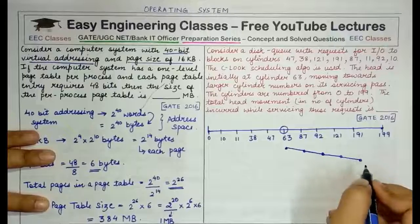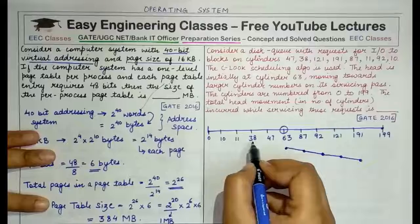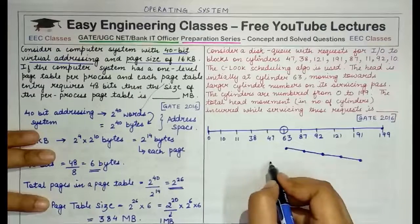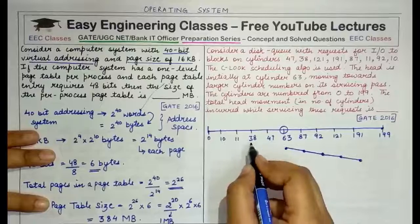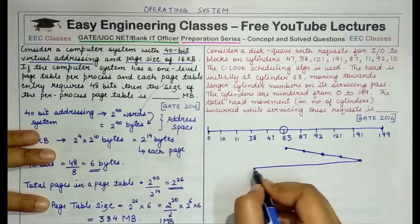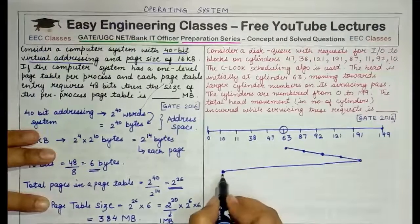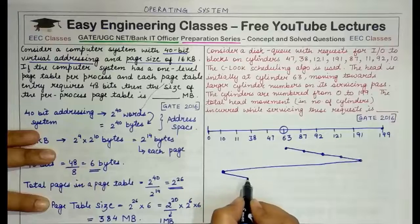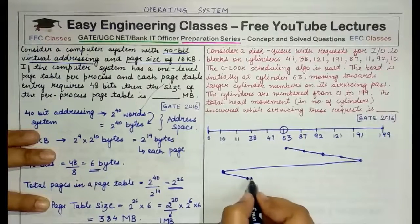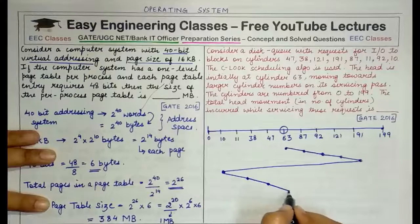Now it has more requests to service which are lower in number: 10, 11, 38 and 47. It will not turn back and service this from 47 to 38 to 11 to 10. No. It will directly come back to the request having the smallest number, service this request and then move in the same direction. Again, it now services 11, then it services 38 and at the end it services 47.